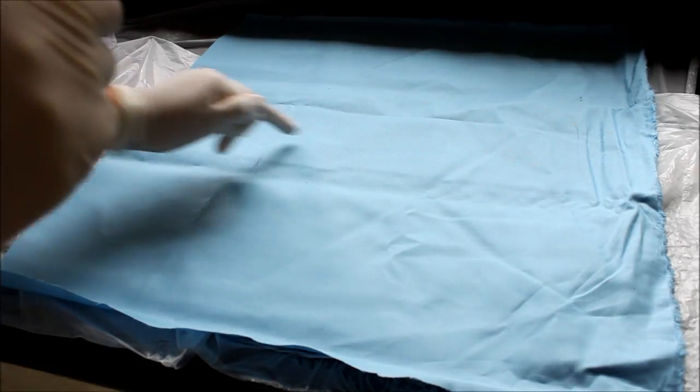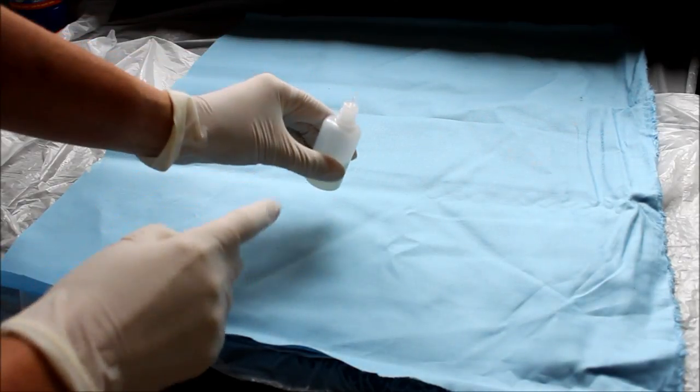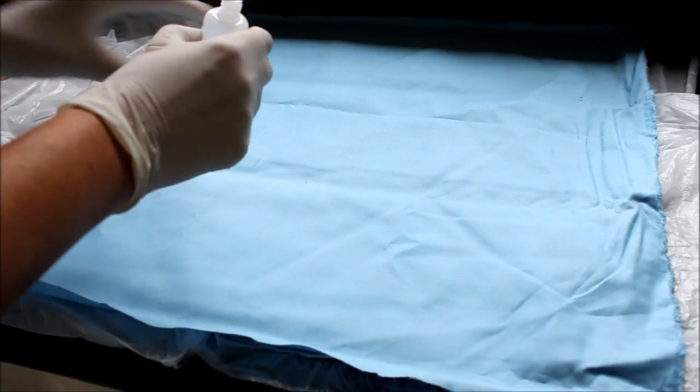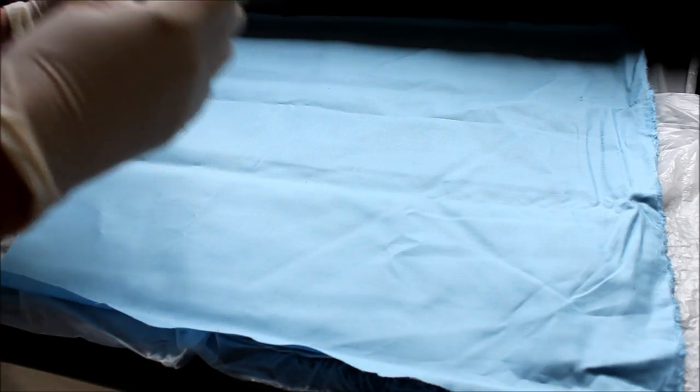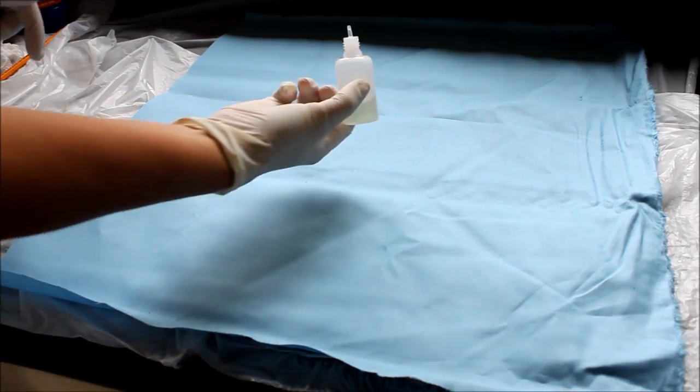For this next one I want to write a word in the middle. You can do that with the same bottle with the small nozzle, or you can use a brush, like a painting brush. I'm going to use the small nozzle.